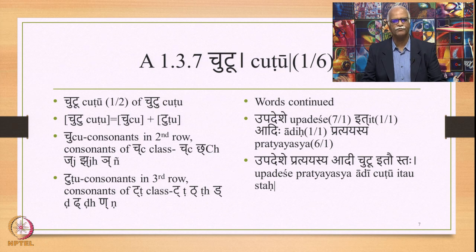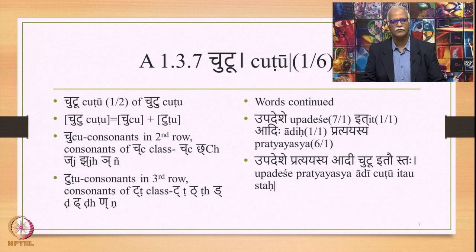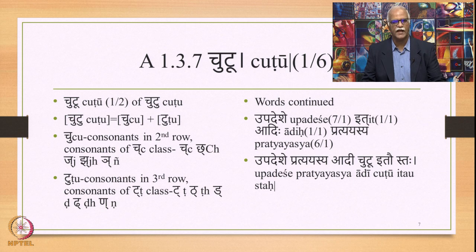Chutu is made up of two components: Chu and Tu. Chu stands for consonants in the second row, that is consonants of the Chu class, namely Ch, Chha, J, Jh, Jhan. And Tu stands for consonants in the third row, that is consonants of the T class. The words continued in this sutra are Upadeshe (7/1), Ith (1/1), Adihi (1/1), and Pratyayasya (6/1). Put together, the meaning of the sutra can be written in the following manner.